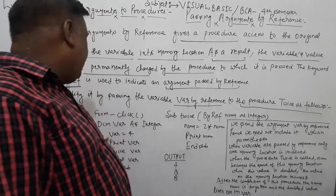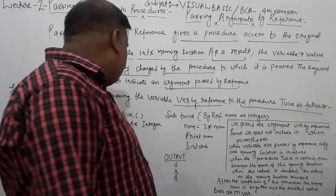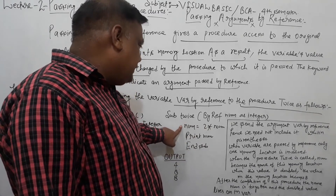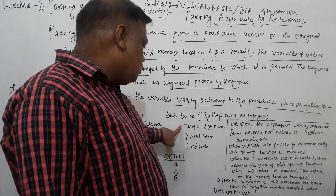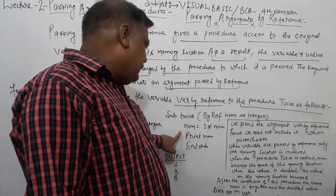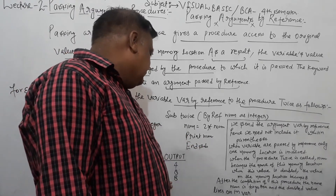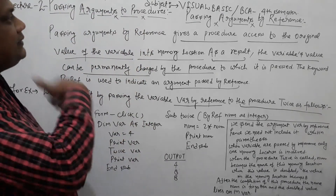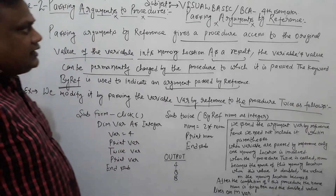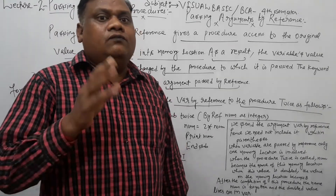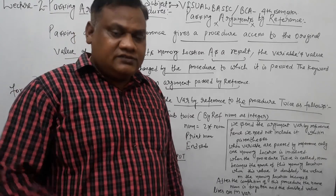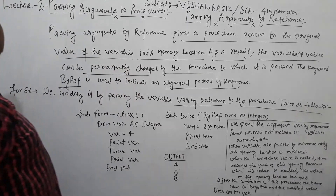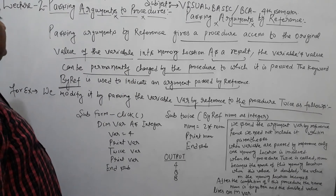We called the twice procedure, which used the memory, and then we printed num and added 8. This topic is very important for students — in the exam, you will be asked about call by value and call by reference in Visual Basic. This is why I covered both call by value and call by reference.